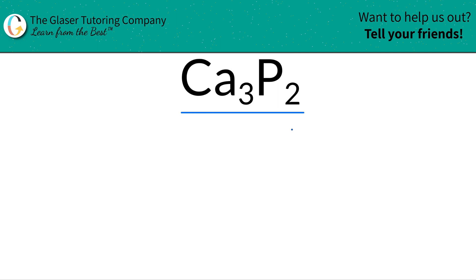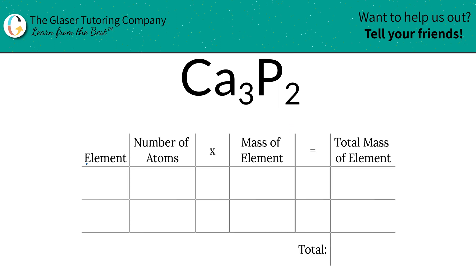So first step is to find the total mass of the compound. Here, take a look. Here's a table. So the first thing is I'm going to write down the particular element or the elements that I see. So I have calcium in calcium phosphide and phosphorus.